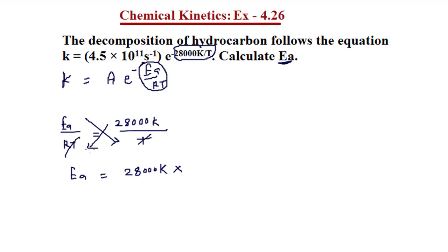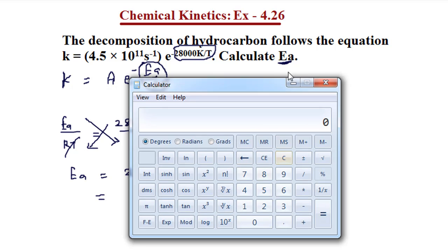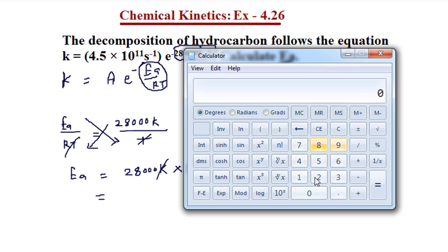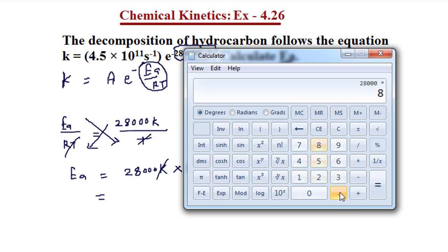Here R is the gas constant, with a value of 8.314 joules per mole K. The K units cancel out. We now multiply: 28,000 multiplied by R value 8.314.